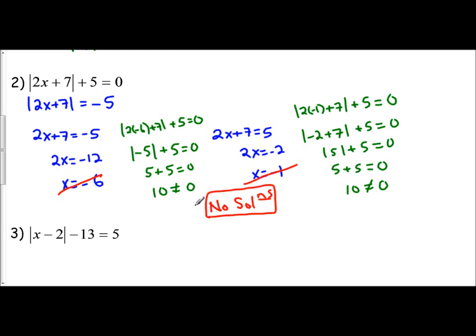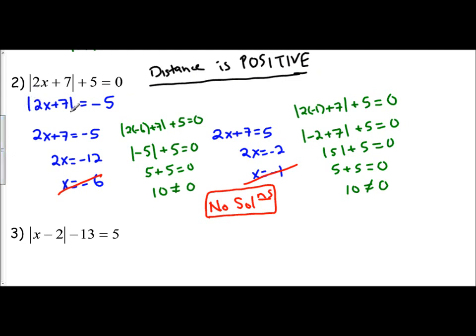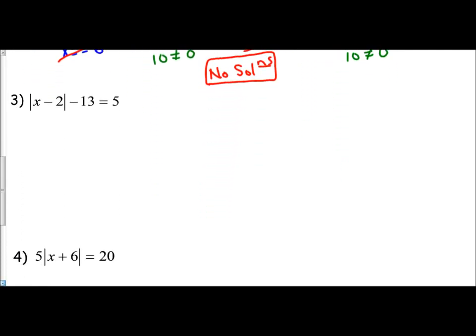Why are there no solutions? It's important to look at the translation of the absolute value equation. We're told 2x plus 7 is located negative 5 units from zero — a distance of negative 5. But recall from our definitions that distance is always positive. So when we isolate our absolute value and see it equals a negative number, there's no way to have any answer because distance can never be negative. That's why it's important to understand the definition of absolute values.